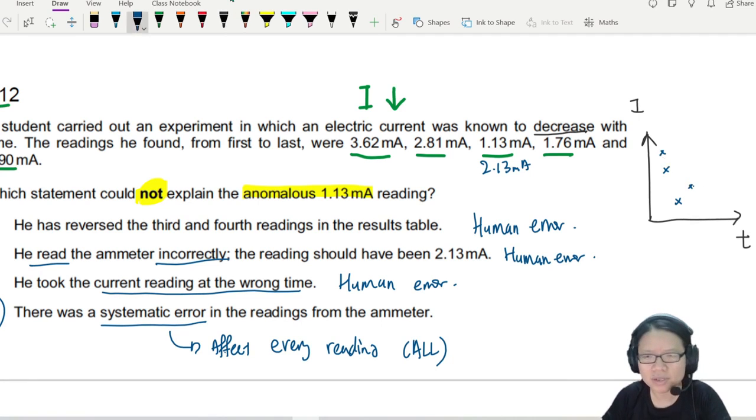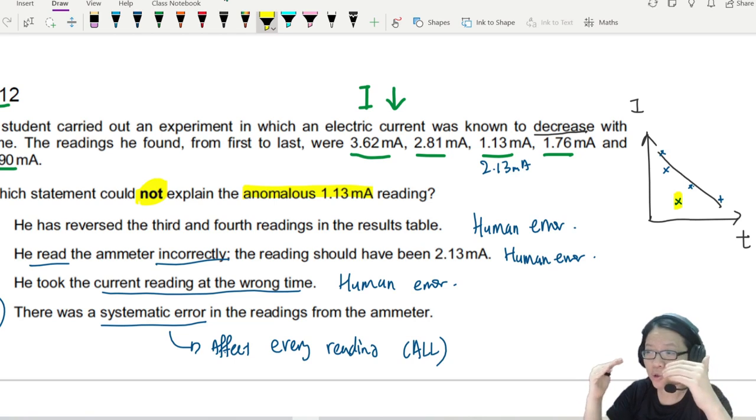I do experiment: 3.62, 2.81, 1.13, 1.76, 0.9. So this is the anomalous data. Let me move the 0.9 higher so the points are balanced. But this one is your anomalous data. If everyone also anomalous, then the whole graph should shift downwards.